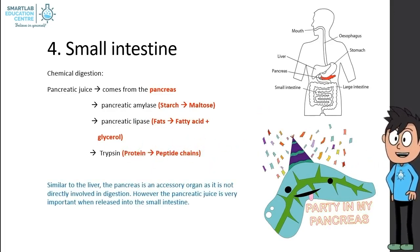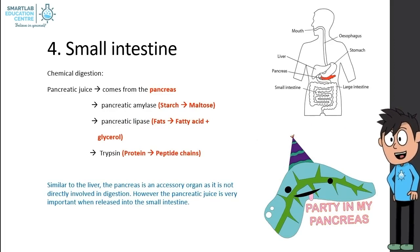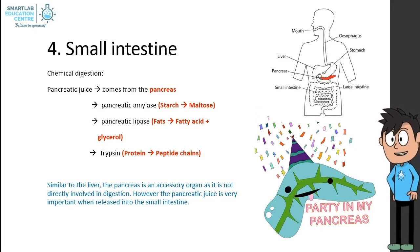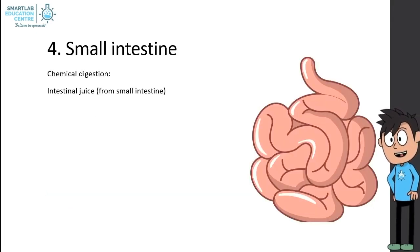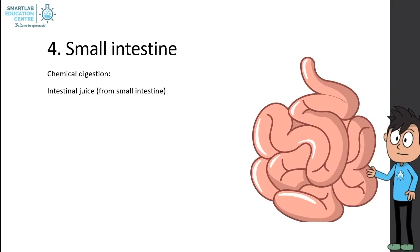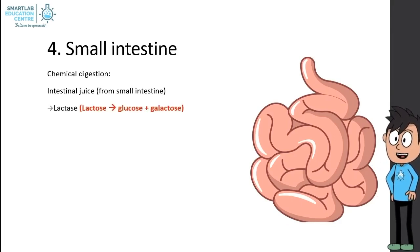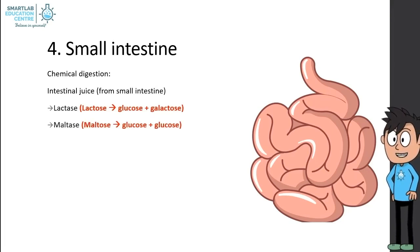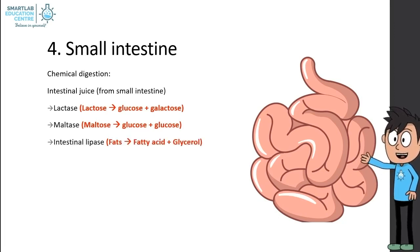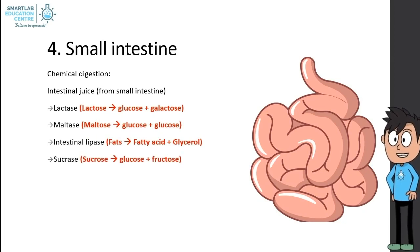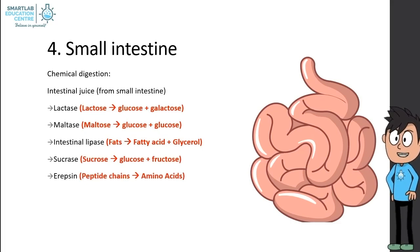Similar to the liver, the pancreas is an accessory organ, but pancreatic juice is very important when released into the small intestine. There is also intestinal juice found in the small intestine, containing several enzymes: lactase, which breaks down lactose into glucose and galactose; maltase, which breaks down maltose into glucose and glucose; intestinal lipase, which breaks down fats into fatty acids and glycerol; sucrase, which breaks down sucrose into glucose and fructose; and erepsin, which breaks down peptide chains into amino acids.